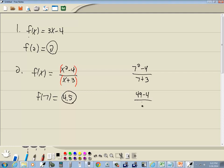We'd have 49 minus 4 over 10. 49 minus 4 is 45 over 10, which would give us our 4.5.